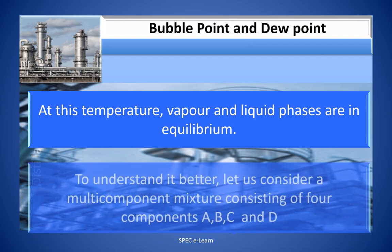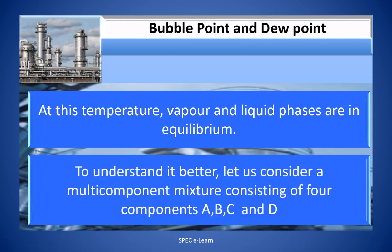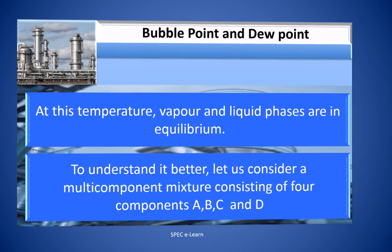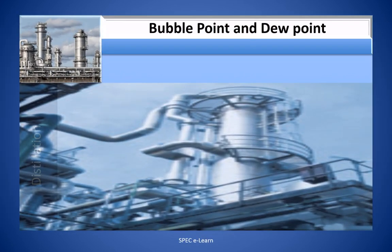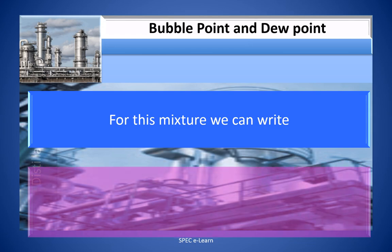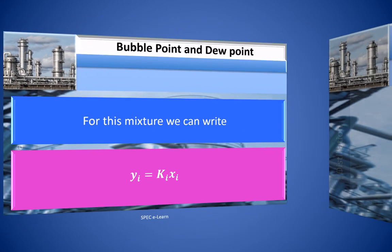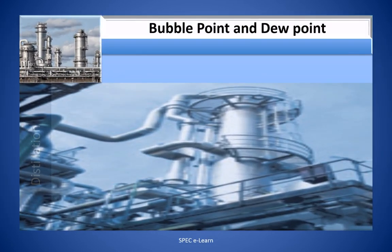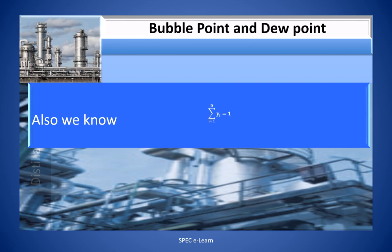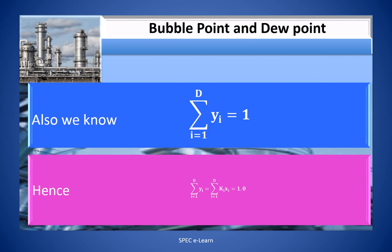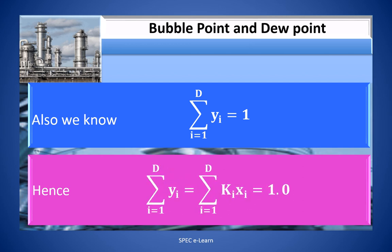To understand it better, consider a multi-component mixture consisting of four components a, b, c, and d. For this mixture, we can write Yi equal to Ki times Xi. Also, we know that sigma from i equals 1 to d of Yi equals 1. Hence, sigma from i equals 1 to d of Yi equals sigma from i equals 1 to d of Ki times Xi, which equals 1.